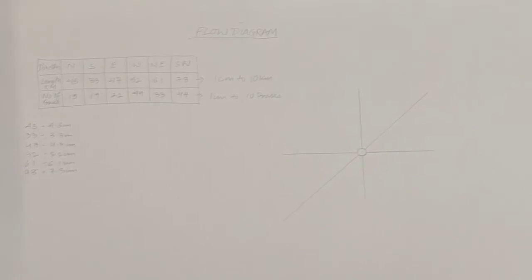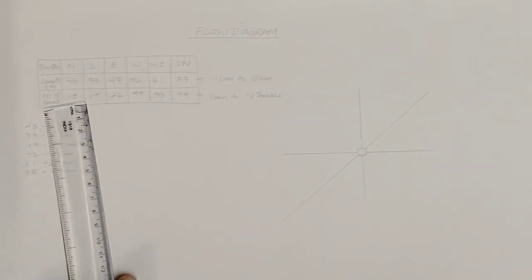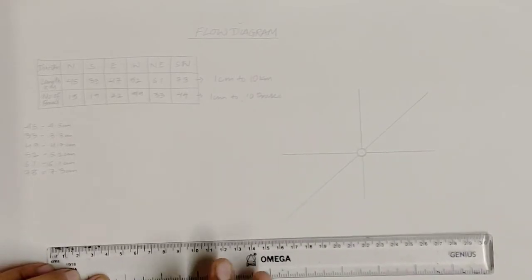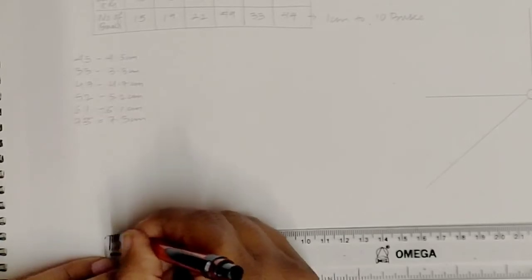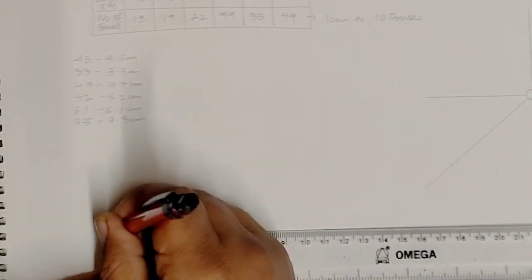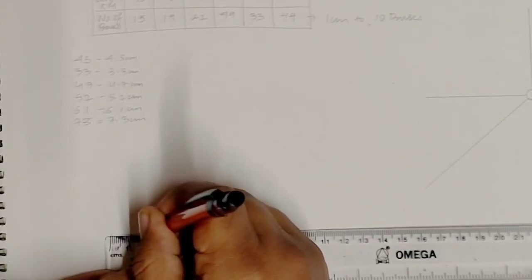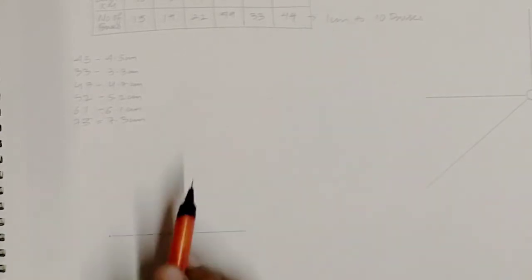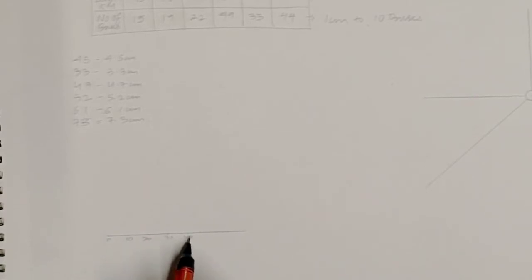This is how we plot the directions for the length of the road. Now for the scale for the number of buses, the scale is 1 centimeter to 10 buses. First, draw a horizontal line of any length, then divide it into several divisions of 1 centimeter each. The highest number of buses is 49, so I'm making 5 divisions going up to 50.